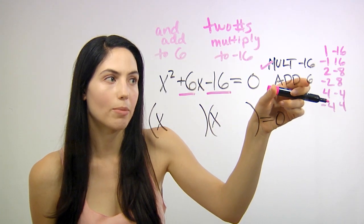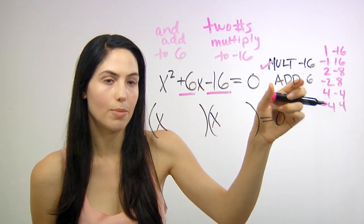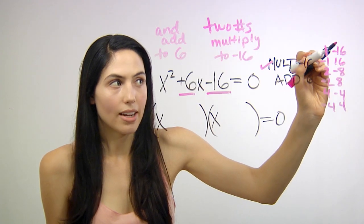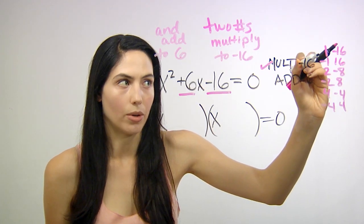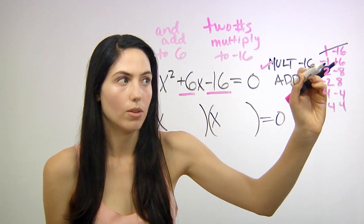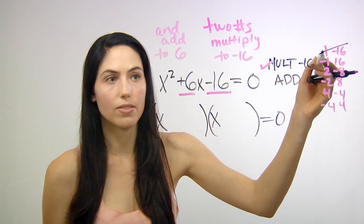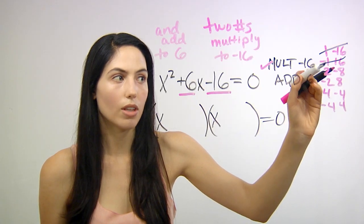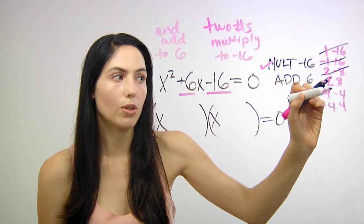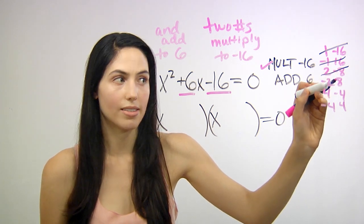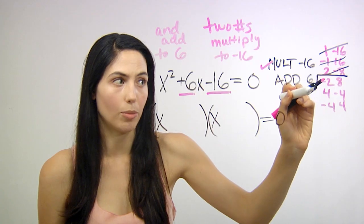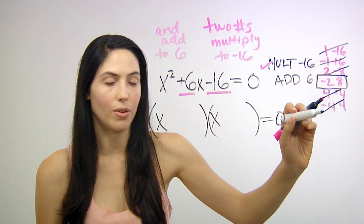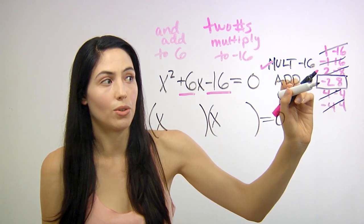Now let's look at the other requirement — you need to find which pairs add to positive 6. 1 plus negative 16 would add to some negative number, so that can't be it. Negative 1 plus 16 would give you positive 15 — a bit too large. 2 plus negative 8 would give you negative 6 — close, but the wrong sign. Negative 2 plus 8 would add to positive 6, so those are your factor numbers: negative 2 and 8.